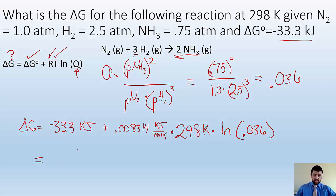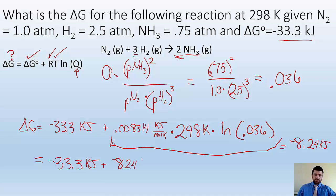This whole thing, this whole thing, I got to be equal to negative 8.24 kilojoules. So when I plug it in, I get negative 33.3 kilojoules plus a negative 8.24 kilojoules, which gives me a final answer of, drumroll, 41.5 kilojoules.